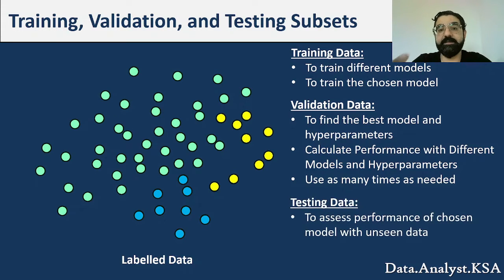The testing data is only used to test the final performance of the models chosen and it's used only once. When we say only once, it doesn't mean that I can only test once. I can test the different models with the testing data once, but I'm not going to change my hyperparameter based on the results I'm getting with my testing data.